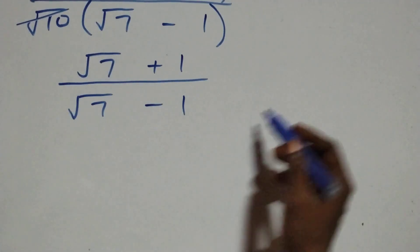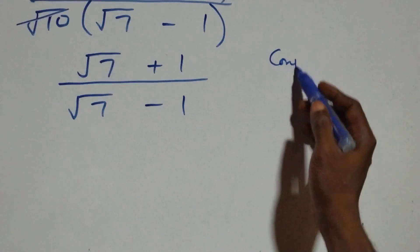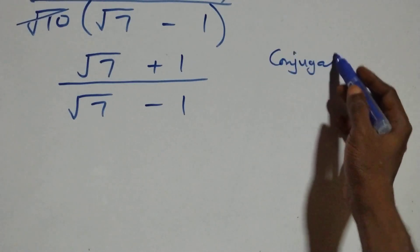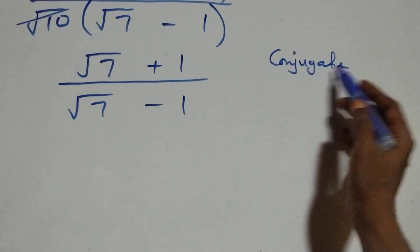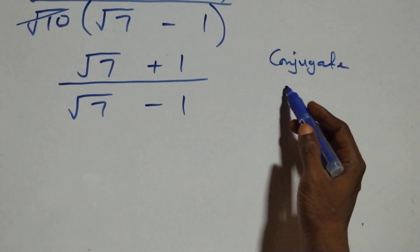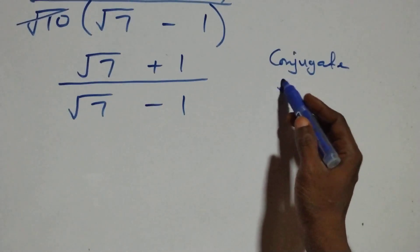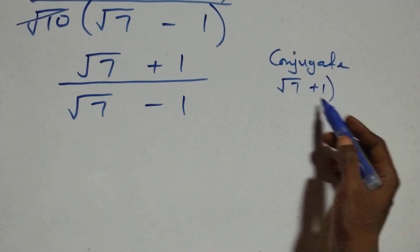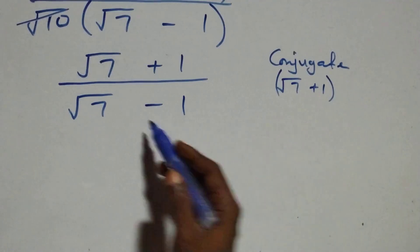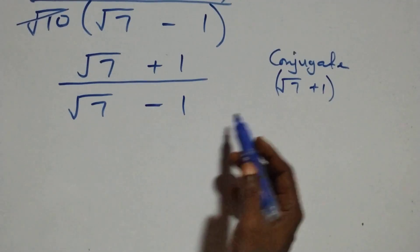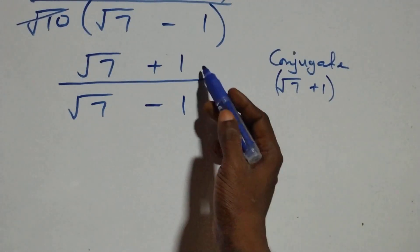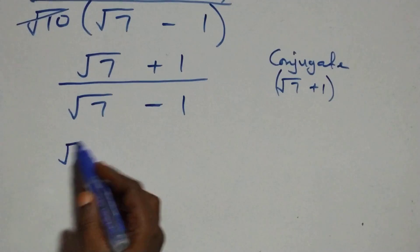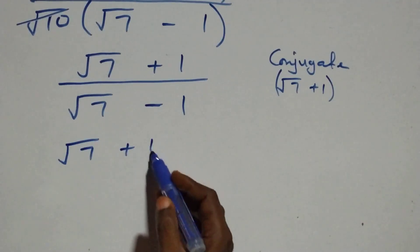Next we rationalize this expression by multiplying the numerator and denominator by the conjugate of the denominator. The conjugate of the denominator root seven minus one is root seven plus one — only the sign changes — so we use this to multiply both numerator and denominator.